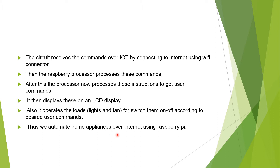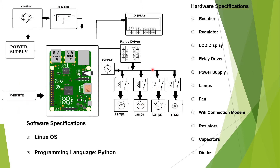That is how we automate our home using Raspberry Pi. Now let us look at the block diagram of our IoT-based home automation system. This is the Raspberry Pi board, which is connected to the DC power supply. We have the IoT Gecko website connected to this Raspberry board, and devices like lamps, fan, and all those home appliances are connected to this board. The display is also interfaced with our Raspberry board.